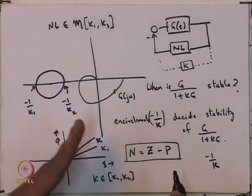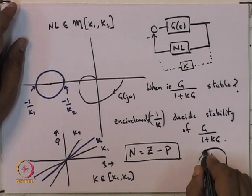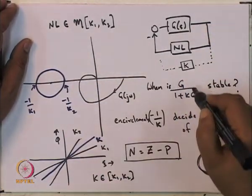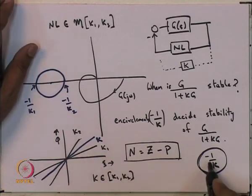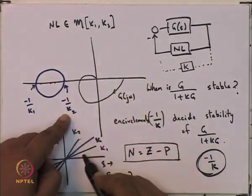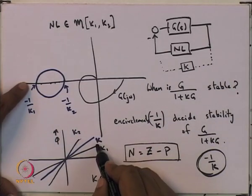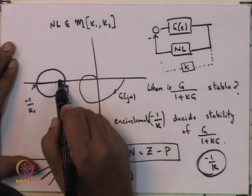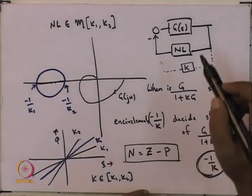Notice that −1/k is some point between −1/k1 and −1/k2. If G is stable, the Nyquist plot should not encircle −1/k for any k in [k1, k2], meaning it should not encircle any point on the real axis inside the circle. If G had poles in the right half plane, then the Nyquist plot should encircle each of those points the appropriate number of times in the clockwise or anticlockwise direction.